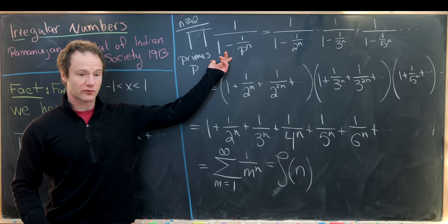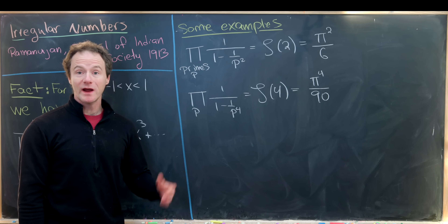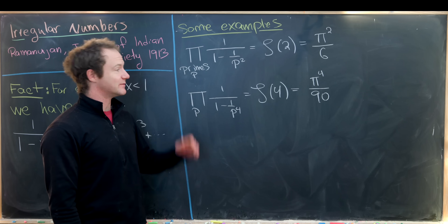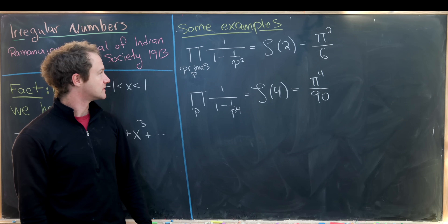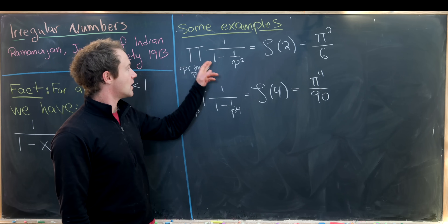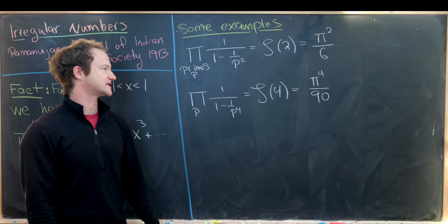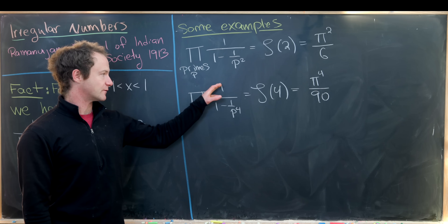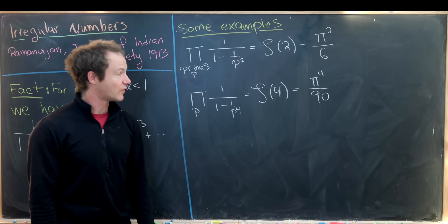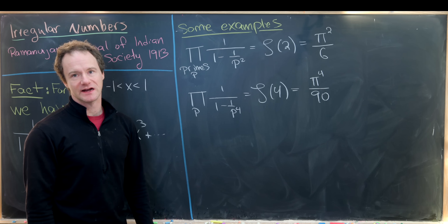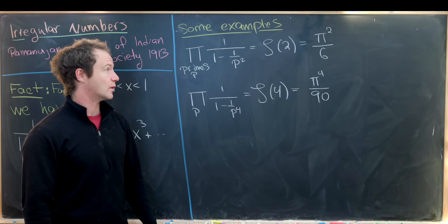So we just obtained this nice product version of the zeta function. Now let's explore a couple of values. The product over all primes of 1 over 1 minus 1 over p squared equals the zeta function evaluated at 2, which is pi squared over 6. And the product over all primes of 1 over 1 minus 1 over p to the 4th equals the zeta function evaluated at 4, which is pi to the 4th over 90. We're not going to derive those values here — derivations are fairly well known.